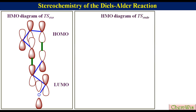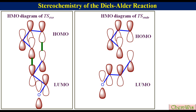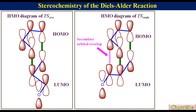In the Hückel molecular orbital diagram of the endo-transition state, just like the exo-transition state, this is the structure of the HOMO of the diene and this is the structure of the LUMO of the dienophile. After reaction, the double bond will develop here, with the CHO group directing towards the developing double bond. These are the primary orbital overlaps responsible for bond formation. There is an additional orbital interaction called secondary orbital overlap that provides additional stabilization to the endo-transition state. So the endo-transition state is more stable than the exo-transition state because of secondary orbital overlap.